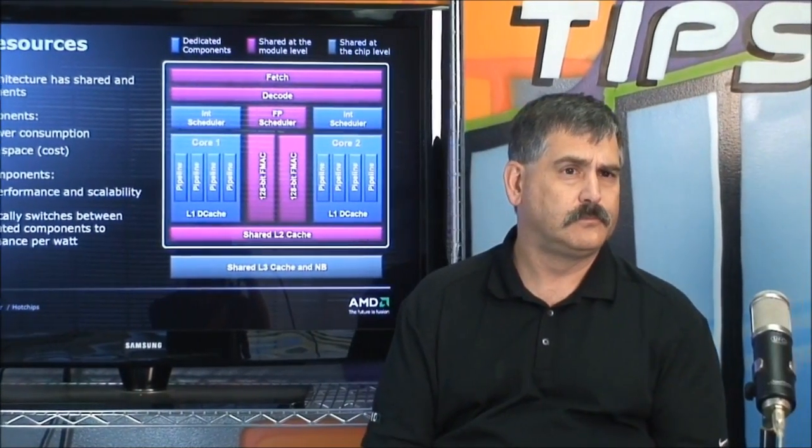Basically what AMD has done is they've taken a single core CPU and instead of just being a traditional core — which would be one integer unit and one floating point unit — they've made it almost like a core and a half, because there are two integer units, one floating point unit, and some shared resources. We can squeeze vastly improved performance out of what is a single core, which could be almost double performance in integer-limited applications.